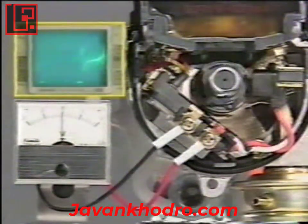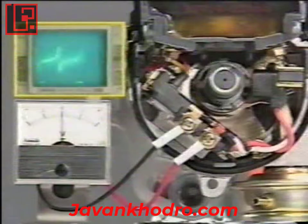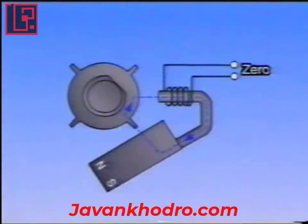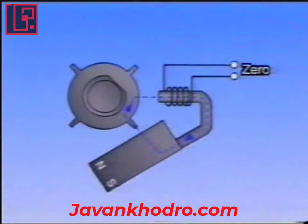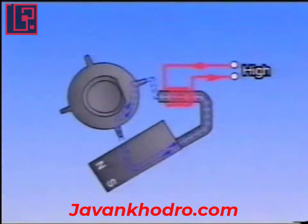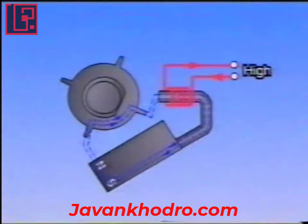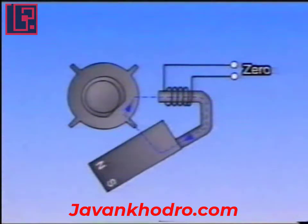But why is a voltage generated? The magnetic flux of the permanent magnet flows through the signal rotor, the pickup coil, the bracket, and returns to the magnet. When the rotor is still, there is no change in the magnetic flux. When the signal rotor rotates and a rotor tooth approaches the pickup coil, the magnetic flux density increases. As the rotor tooth moves away from the pickup coil, it decreases. This means that the voltage generated in the pickup coil depends on the changes in the magnetic flux.